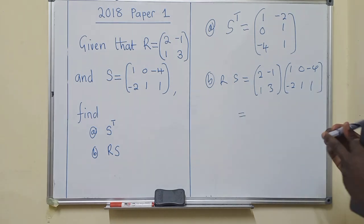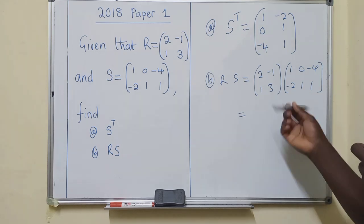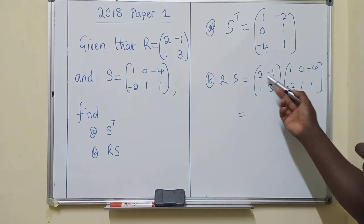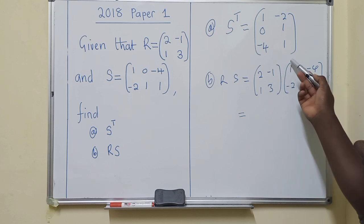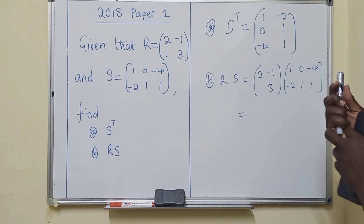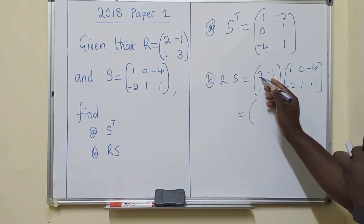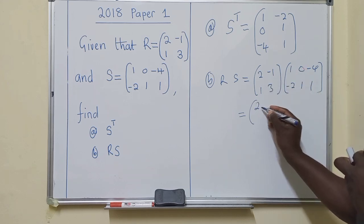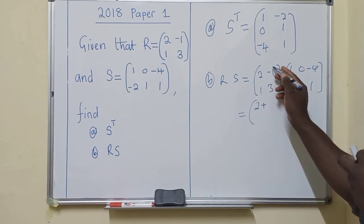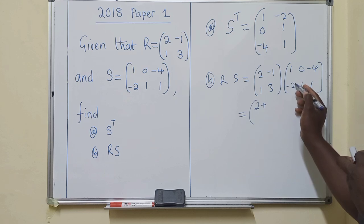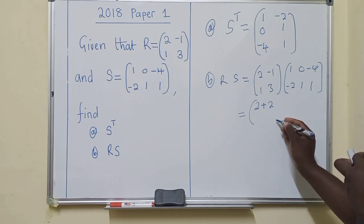So here, how it works with multiplication, you start with the first row multiplied by the first column. So meaning these two will be multiplied by 1, so 2 times 1 is 2, and then you say plus negative 1 multiplied by negative 2, negative 1.